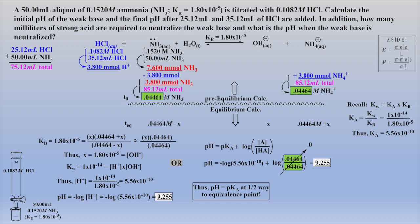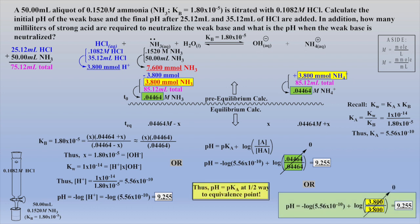Here we see that millimoles of conjugate acid will cancel with millimoles of weak base within the Henderson-Hasselbalch equation, proving the pH is equal to the pKa. Or, as demonstrated earlier in this review, one could directly place the millimoles of base and acid into the Henderson-Hasselbalch — but even with this approach, the quantities cancel and the pH is simply equal to the pKa. Clearly, this is a much easier problem when one recognizes that the pH equals the pKa when halfway to the equivalence point, or equivalently, when millimoles of weak base equal millimoles of conjugate acid.